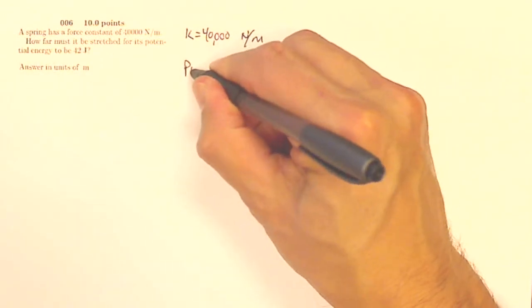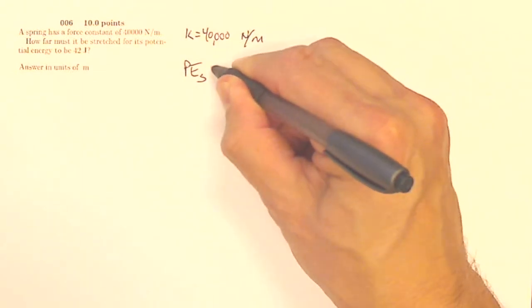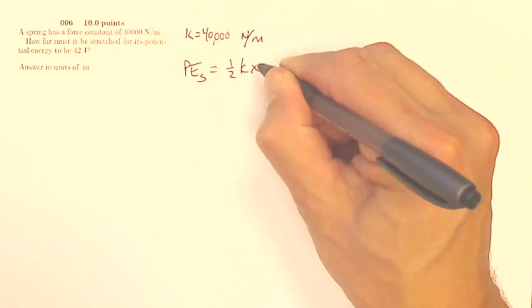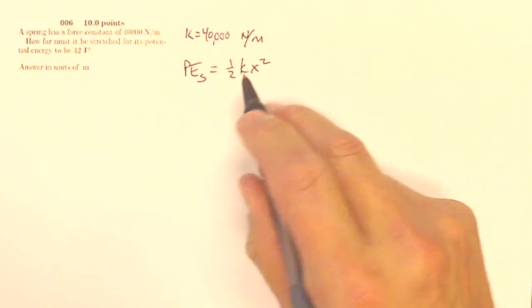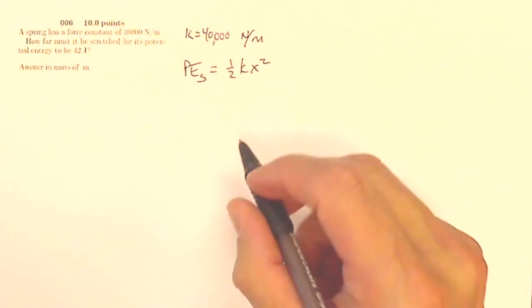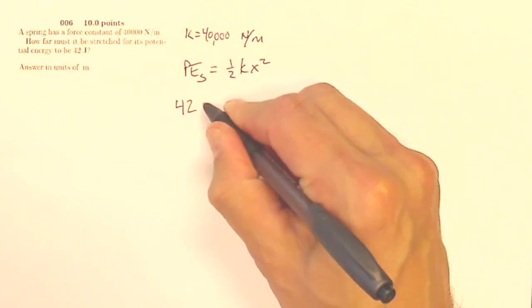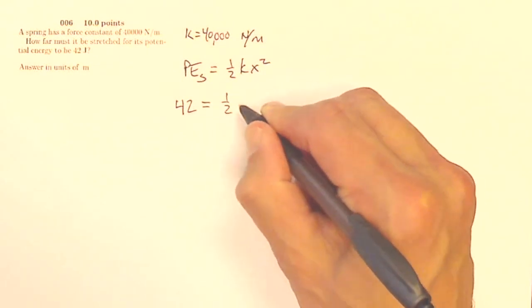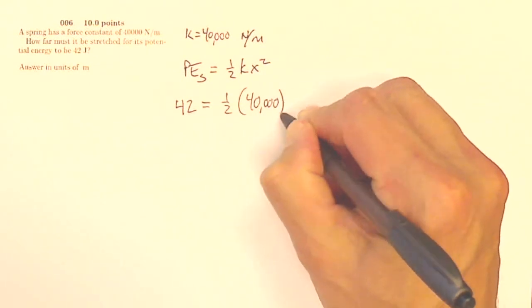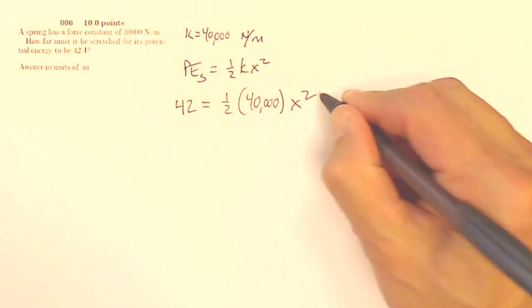Well now, the potential energy for a spring is going to be one-half Kx squared. And I'm looking for x because 42 joules is going to be my potential energy. So I'll get 42 joules equals one-half of 40,000 times x squared.